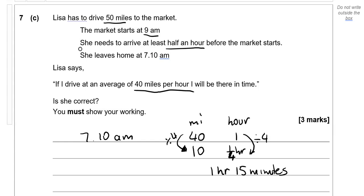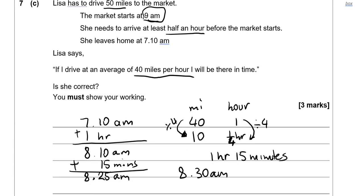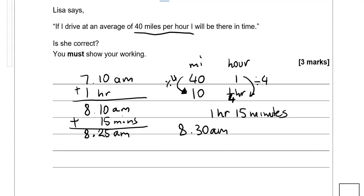So 7.10am, if we add 1 hour, that's going to be 8.10am. If we add 15 minutes, that's going to be 8.25am. Now the market starts at 9am and she needs to be there half an hour before, which is 8.30am. 8.25am is earlier than 8.30am so she's correct.